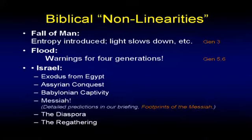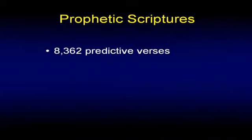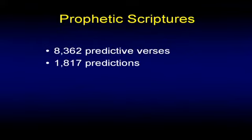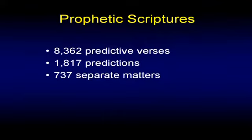The Diaspora is recorded in the Torah along with the regathering. This book in your lap has over 8,000 verses that are predictive in nature — dealing with almost 2,000 predictions on over 700 different matters, by just one cataloging by J. Barton Payne in his Encyclopedia of Biblical Prophecy. Clearly, the Bible isn't just a few prophecy verses — it is predictive from cover to cover in more ways than you can discover in your lifetime.